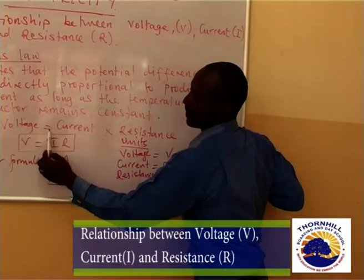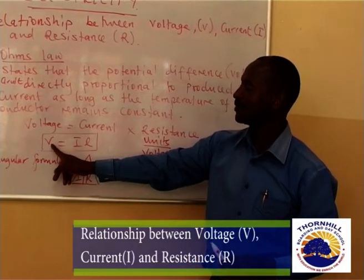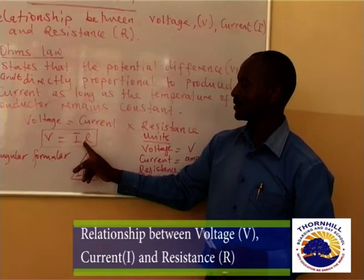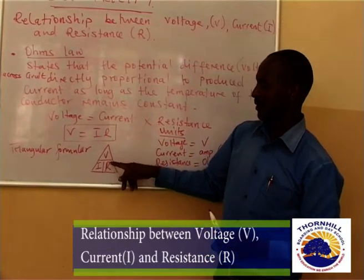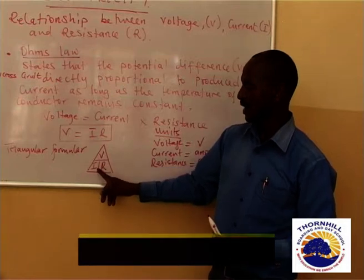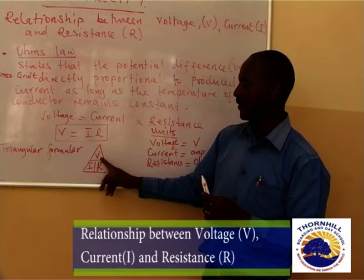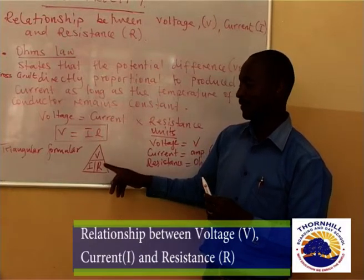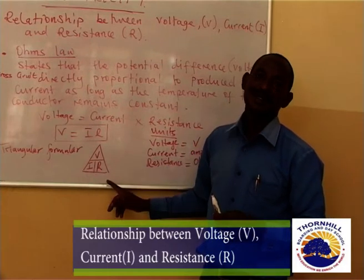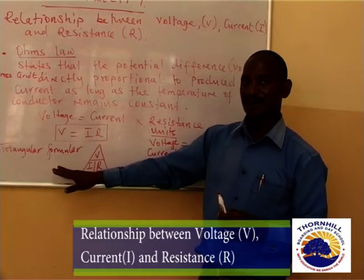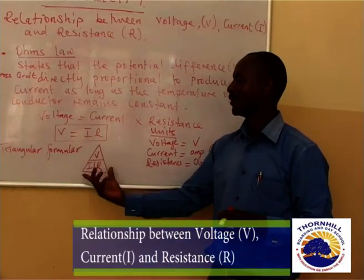Since current is flowing through a conductor which has its own temperature, we come to the formula: voltage equals current times resistance — V = IR. We have what is known as the triangular formula. Voltage equals current times resistance. Current equals voltage divided by resistance. Resistance equals voltage divided by current. Please remember this formula — it is very important — known as the triangular formula. If you are able to make each one of these the subject of the formula, you are able to apply this.